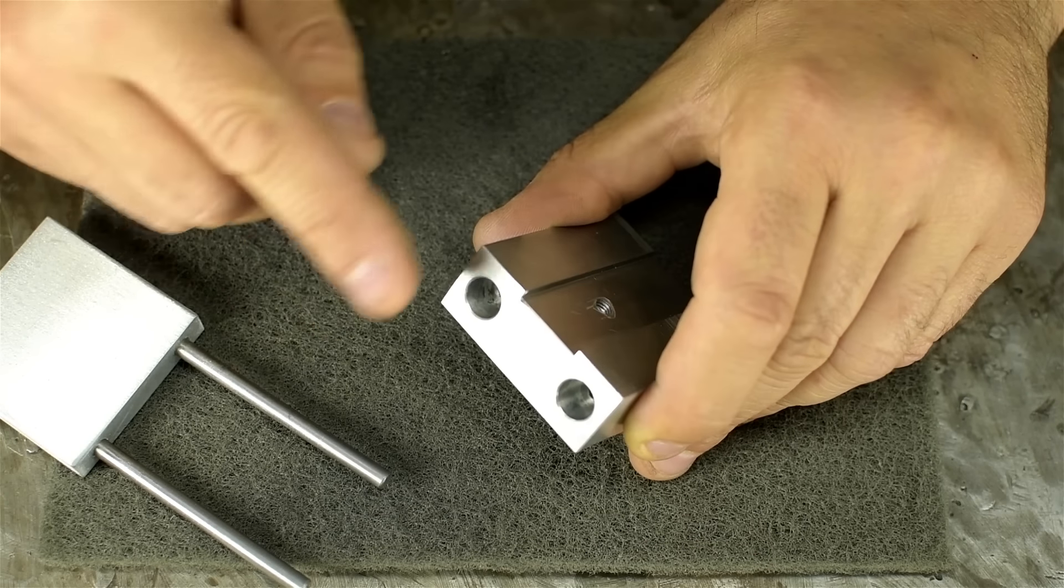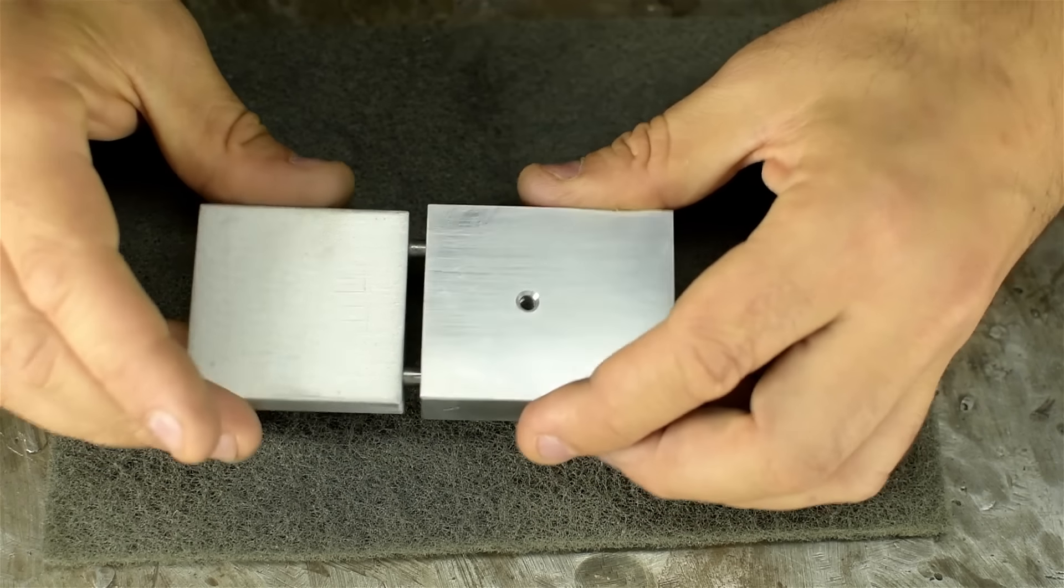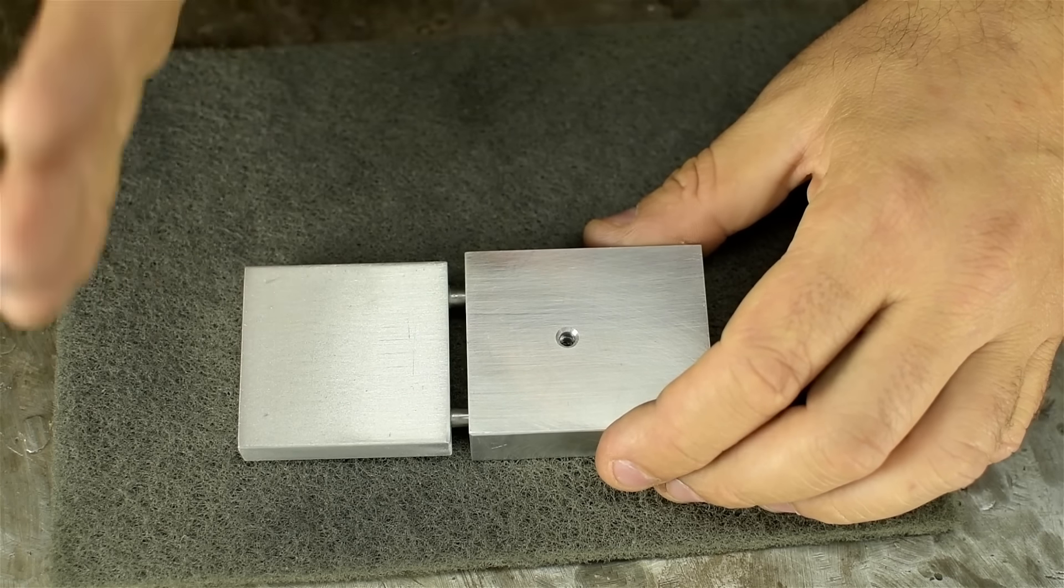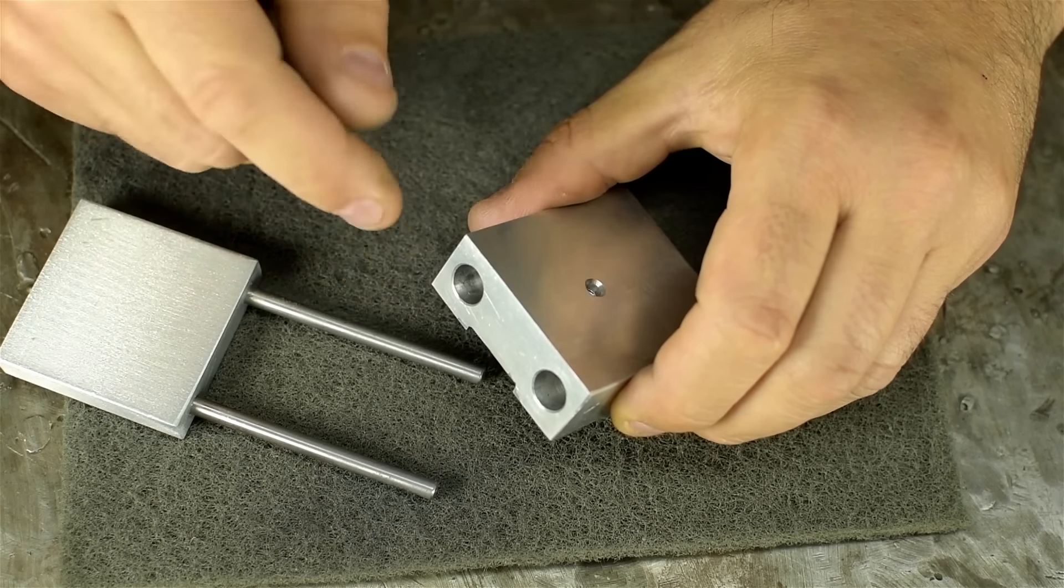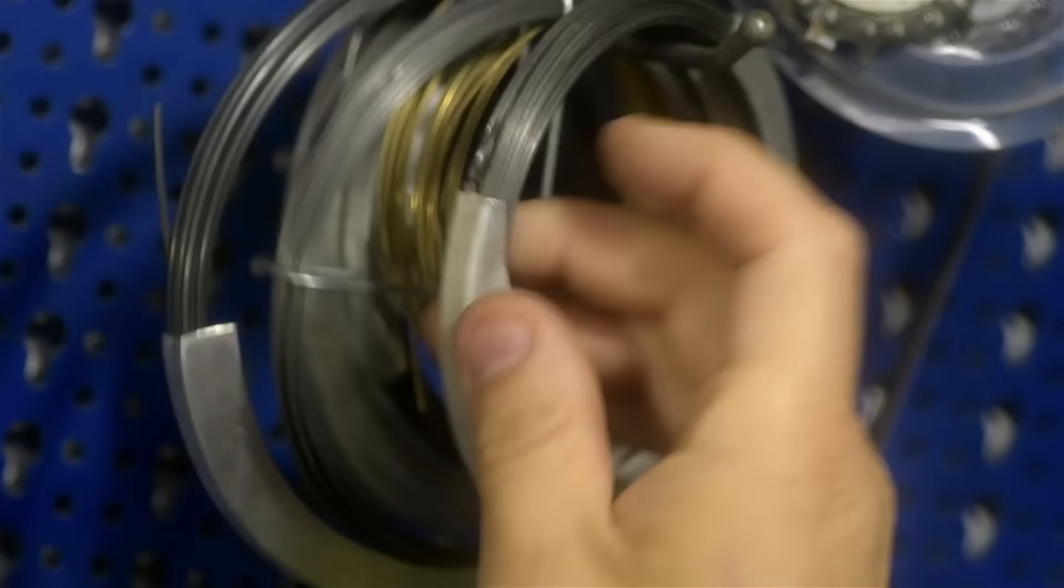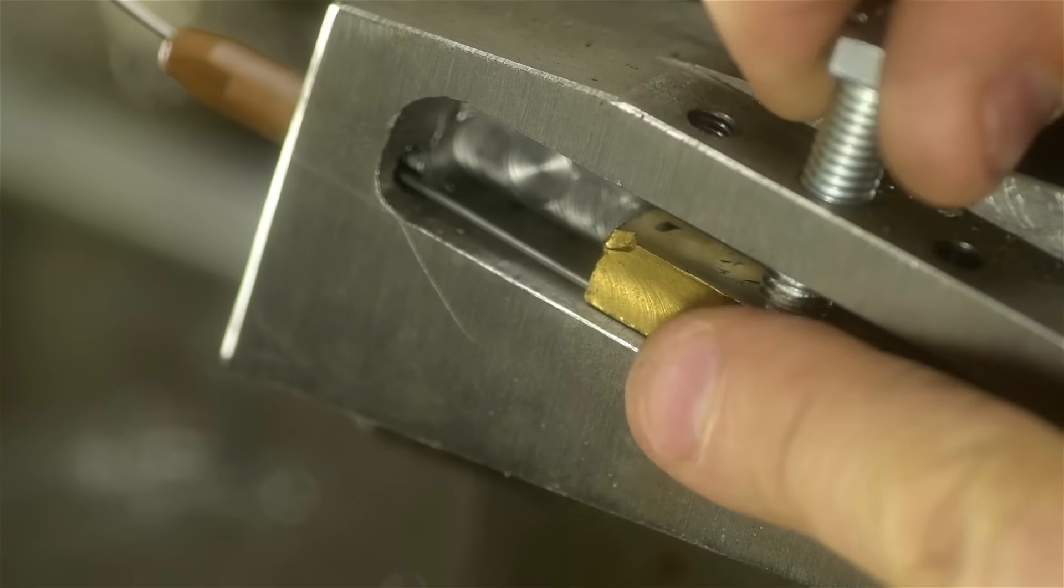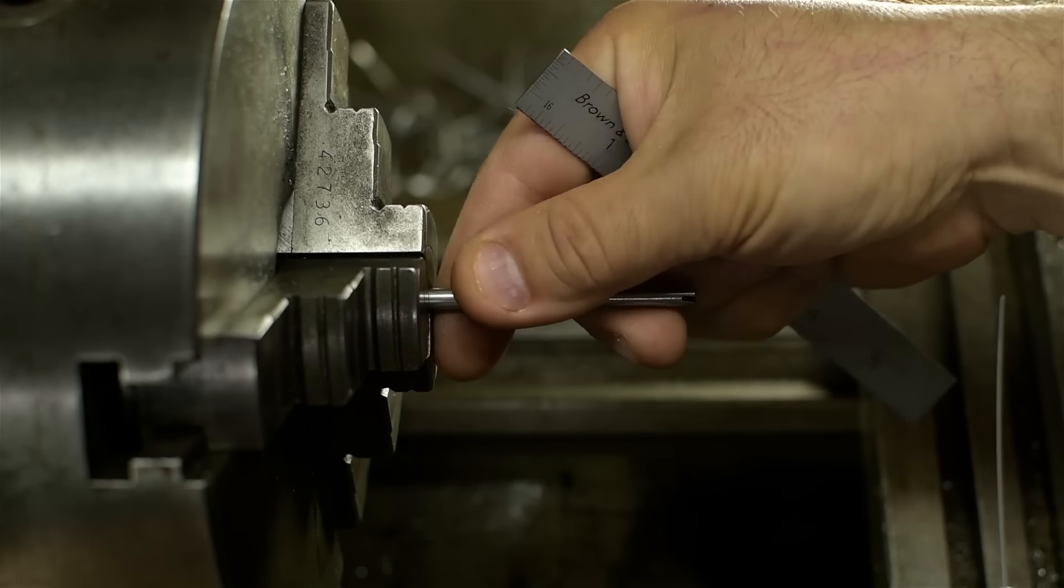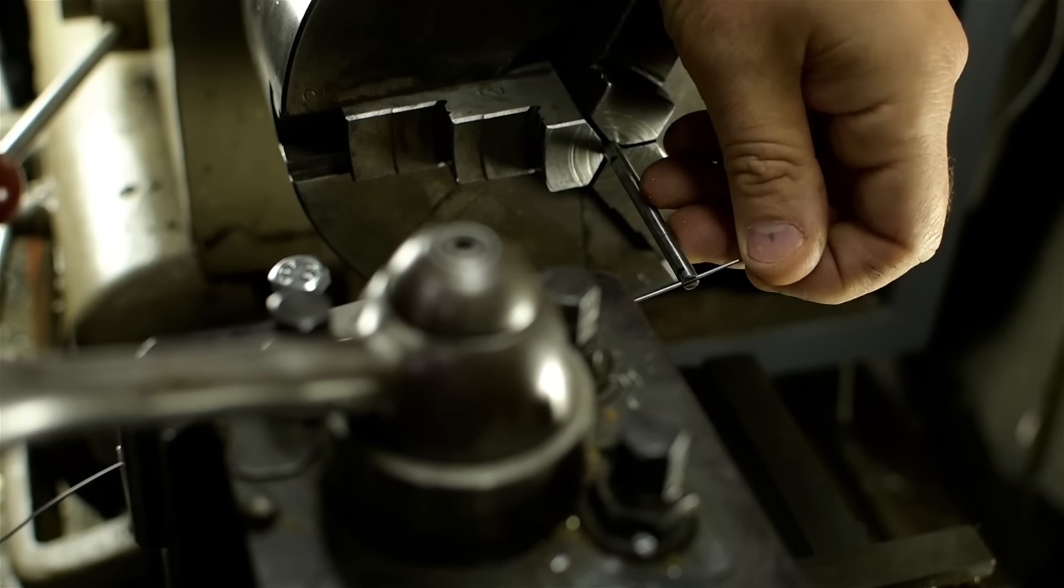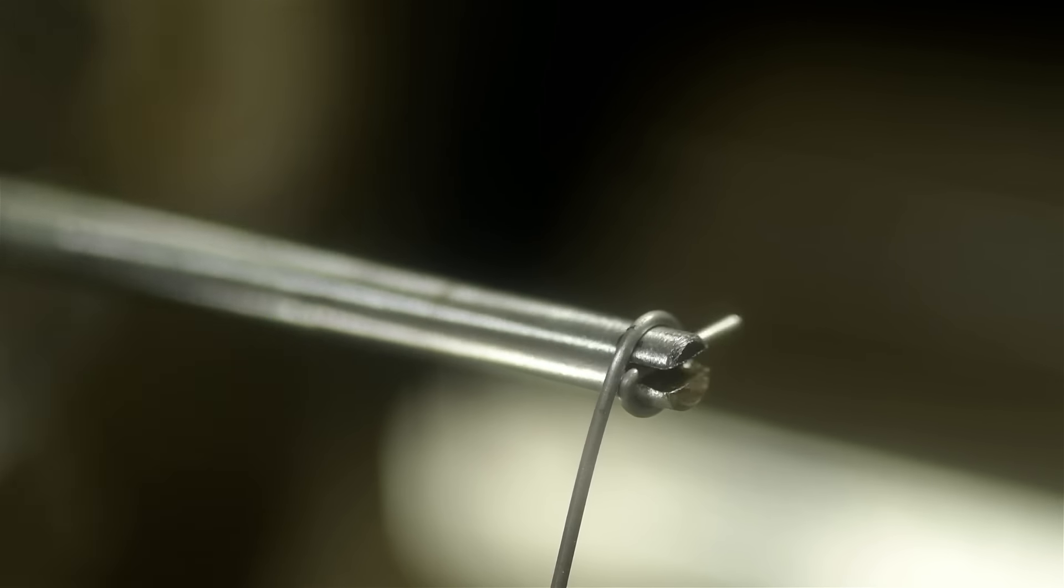But those two counterbored holes are just to give my spring some body length when it's fully compressed. I want this thing to look closed, or closed-ish, when we push it shut. And compression springs that have zero body length haven't been invented yet, so I can't show you those. Again, just some place for the springs to go. Let's head over to the lathe.